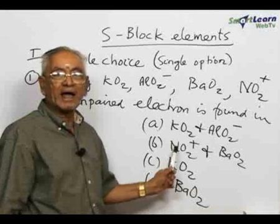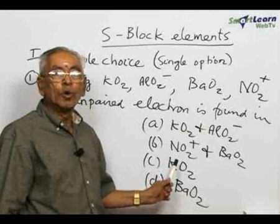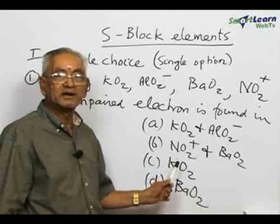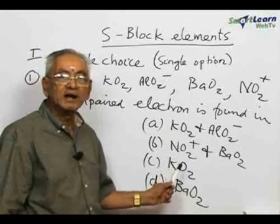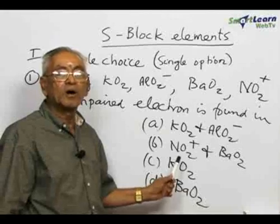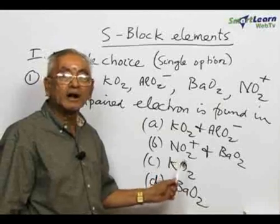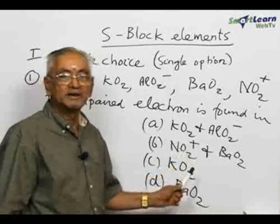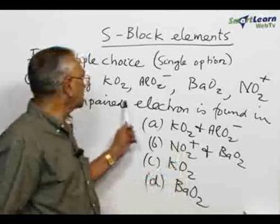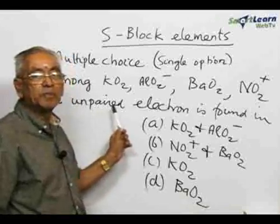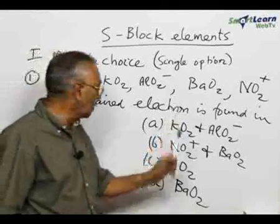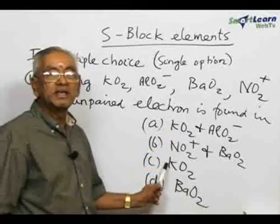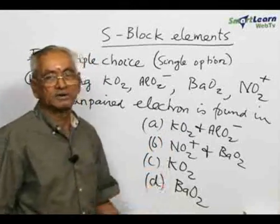Superoxide contains the anion O₂⁻. This O₂⁻ contains a single unpaired electron — it is an odd electron species and exhibits paramagnetism. Therefore, the answer to this question is that the unpaired electron is found in KO₂, making option C the correct choice.